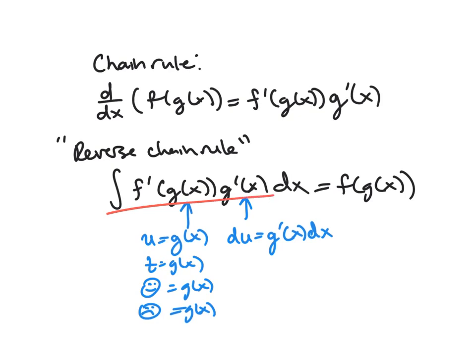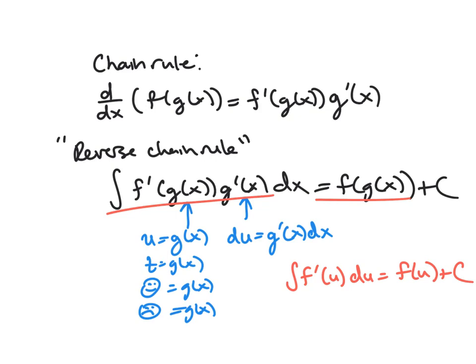Basically it turns this integral into something of the form: the integral of f prime of u du, just by directly substituting in — every time we see g of x we put u, and du replaces g prime of x dx — which equals f of u plus c. I should have a plus c because this is the indefinite integral, so I should have a family of functions.